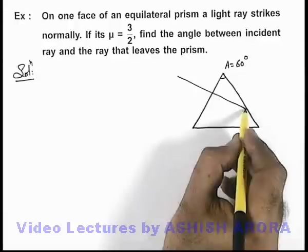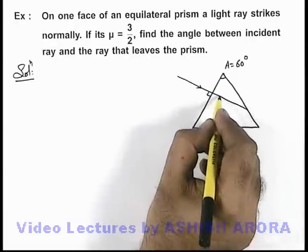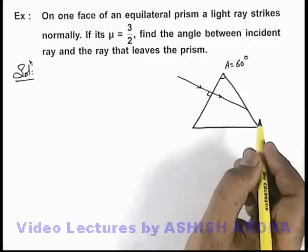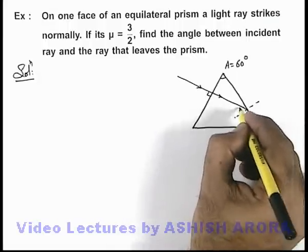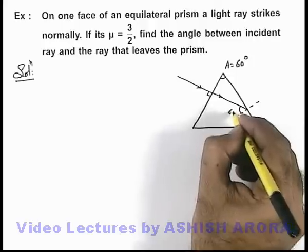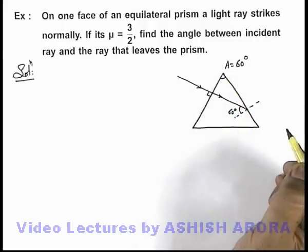If a light ray is incident onto the first surface of the prism normally, we know that it will be refracted as is without any deviation. On the other face it will be incident at an angle of 60 degrees, because if this angle is 60, this will be 30 and this will also be 60.